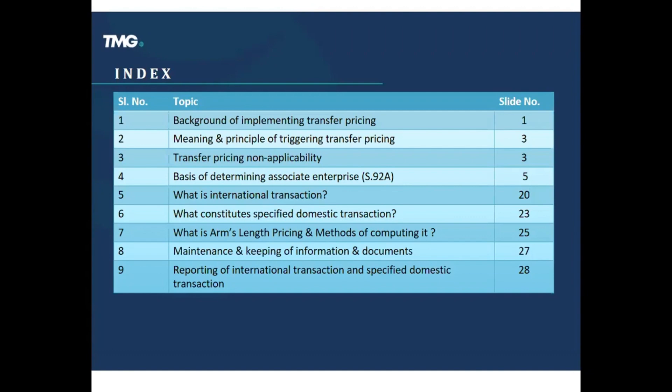We'll also cover what is an international transaction, what constitutes specified domestic transactions, arm's length pricing and methods of computing it. We'll go through the maintenance of information and documents under transfer pricing regulations, which is a very key issue, and the reporting of international transactions. We'll cover specified domestic transactions including threshold limits, prescribed forms, and stringent penalties in cases of non-compliance.